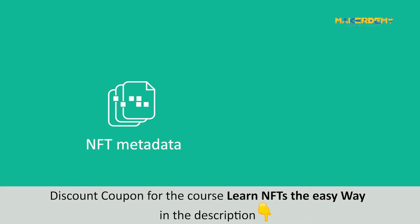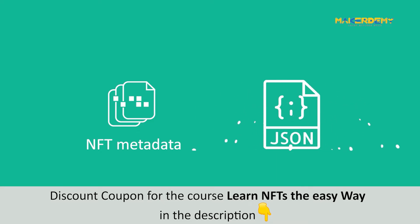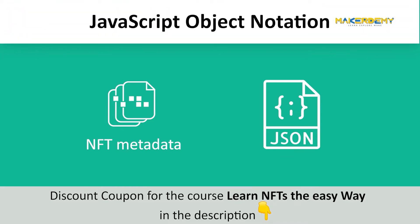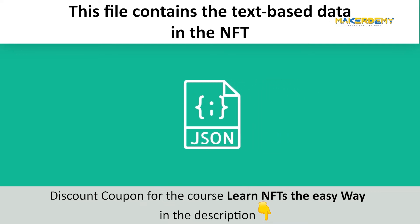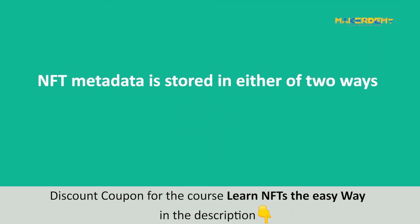Typically, NFT Metadata is stored in the form of a JSON file. JSON stands for JavaScript Object Notation and is a lightweight file format, in the sense that it is easy for humans to write and machines to understand. This file contains the text-based data in the NFT and can link to external media. NFT Metadata is stored in one of two ways: on-chain or off-chain.